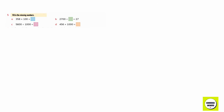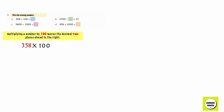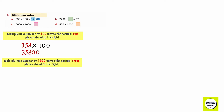Question number five — Write the missing numbers. Multiplying a number by 100 moves the decimal two places to the right. So 358 multiplied by 100 gives us 35,800. Multiplying a number by 1,000 moves the decimal three places to the right.